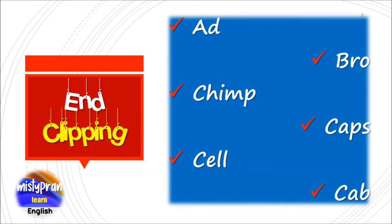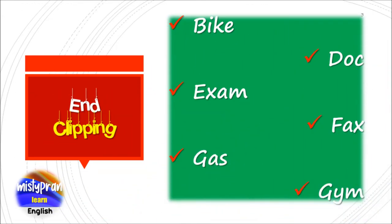End clipping — clipping towards the end. Examples: Ad from advertisement. Bro from brother. Chimp from chimpanzee. Caps from capital letters. Cell from cell phone. Cab from cabriolet. Bike from bicycle. Doc from doctor.